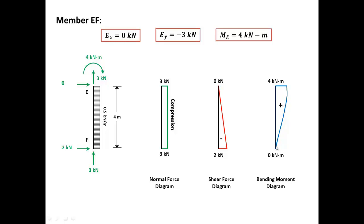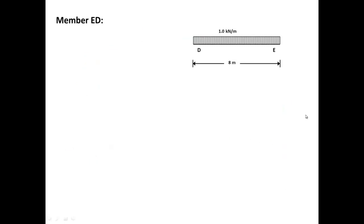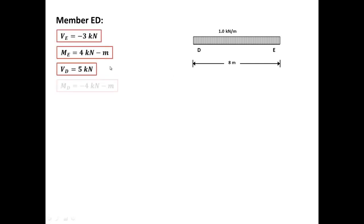For the moment, we start with zero and we end up at four kilonewton-meters — why four? Because that's what we got. But what about the shape? Why is it curved? Since we have a distributed load, the moment diagram will be curved, and since we have a gradually increasing or decreasing shear force diagram, we will have a curved bending moment diagram. Now let's take a look at member ED.